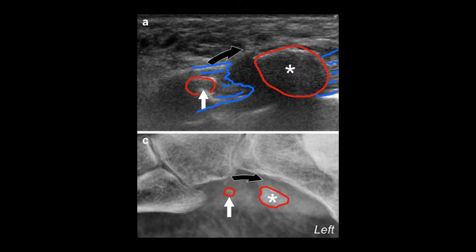This image shows us a peroneus brevis tear. You can see and confirm that with the discontinuity of the echogenic fibrillar fibers of the peroneus brevis.